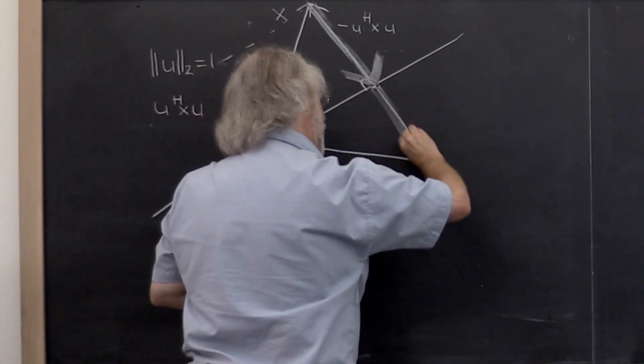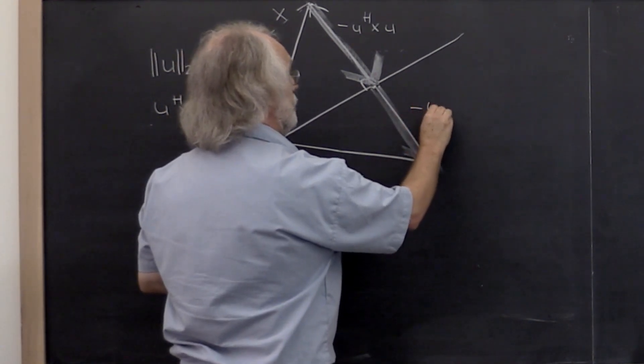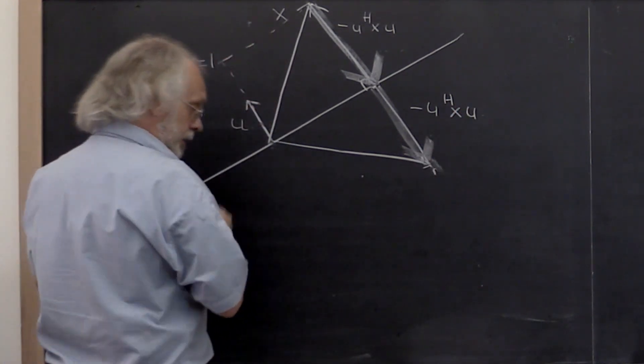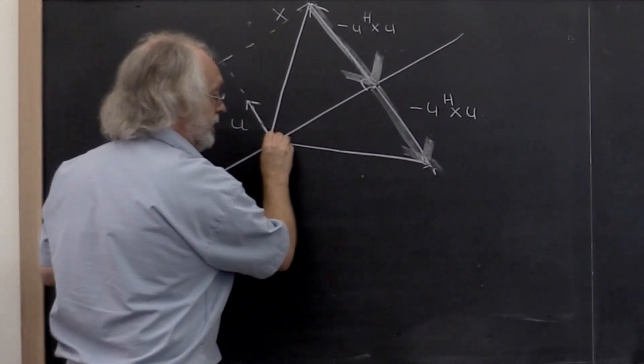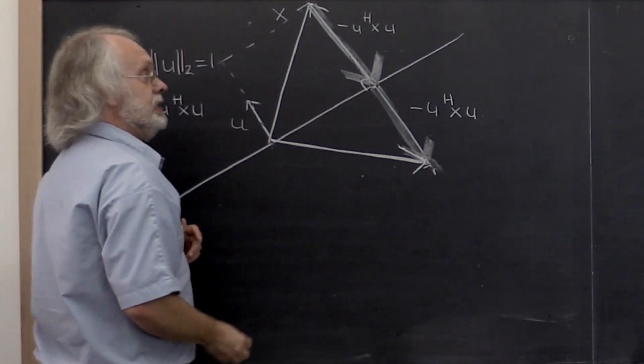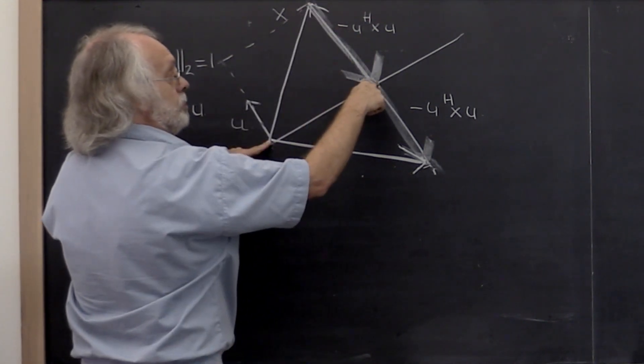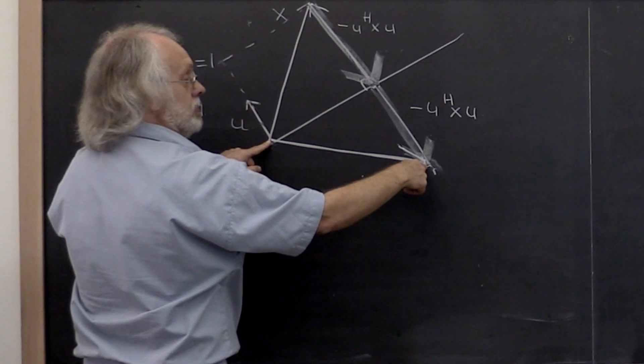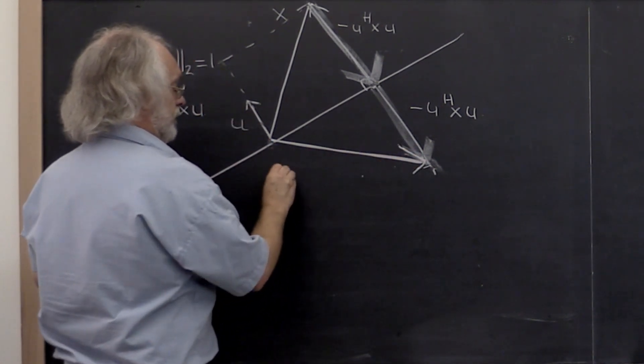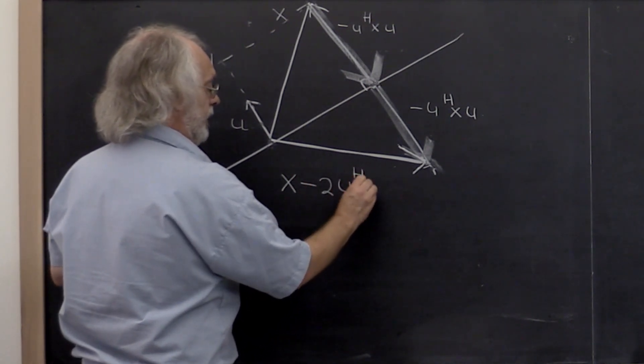And therefore, this vector right here is the vector x minus u dot product with x times u minus u dot product with x times u. In other words, this vector right here is the vector x minus 2 times the dot product of u with x times u.